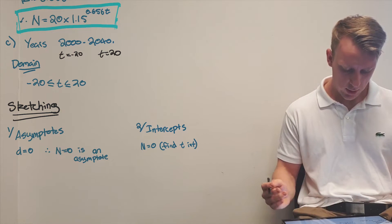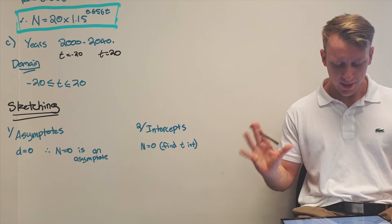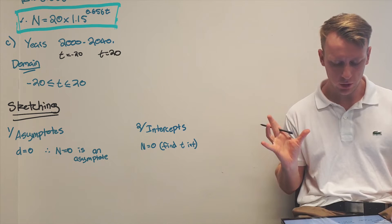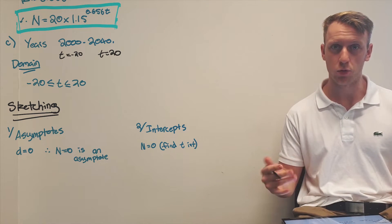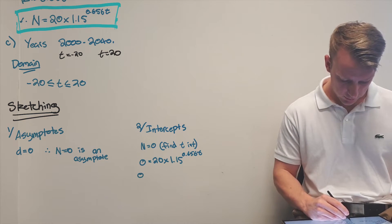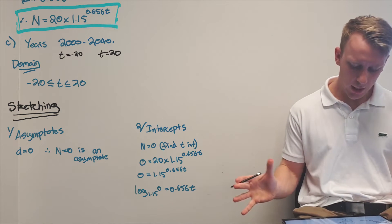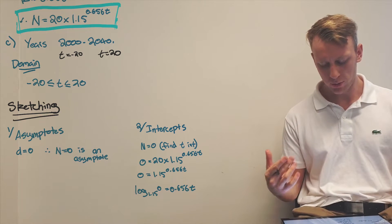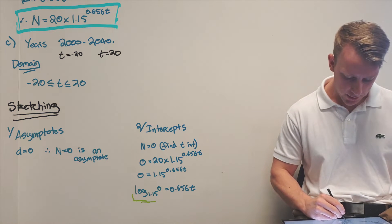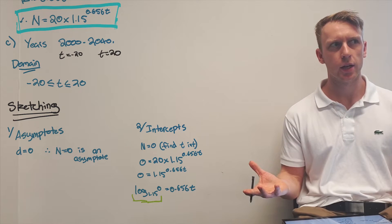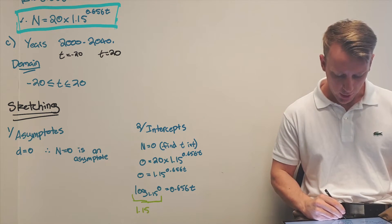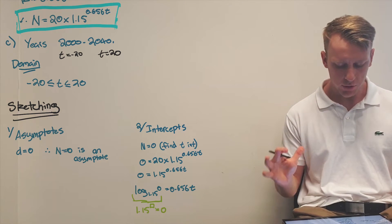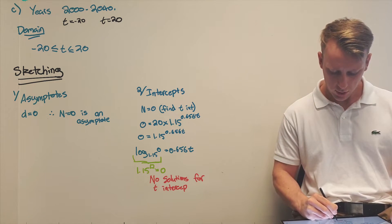Next, intercepts. Looking for a t-intercept, we show what the algebra looks like: we arrive at log base 1.15 of 0 equals 0.656t. This has no solution — it's equivalent to asking what power of 1.15 equals zero, which is impossible. So there is no t-intercept.